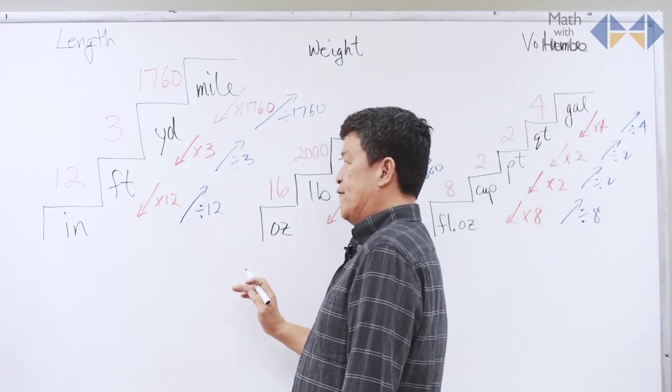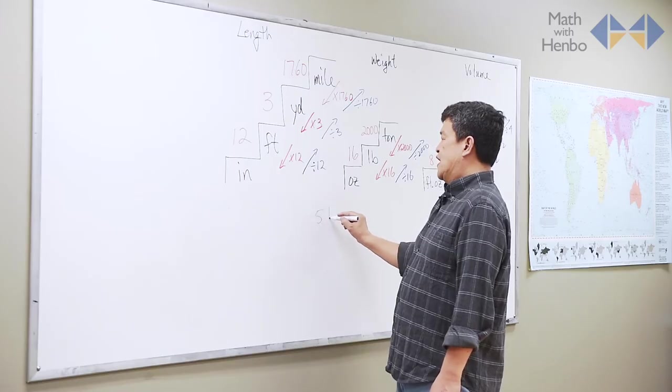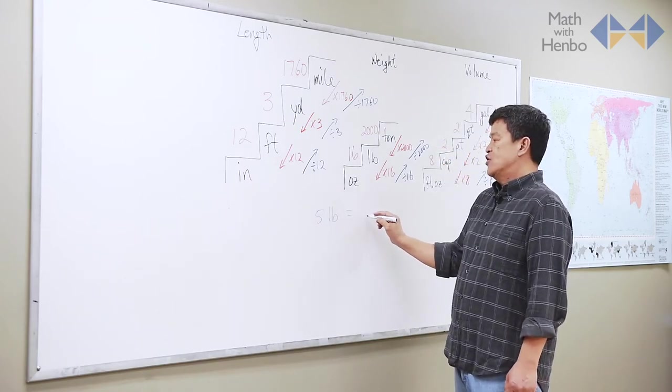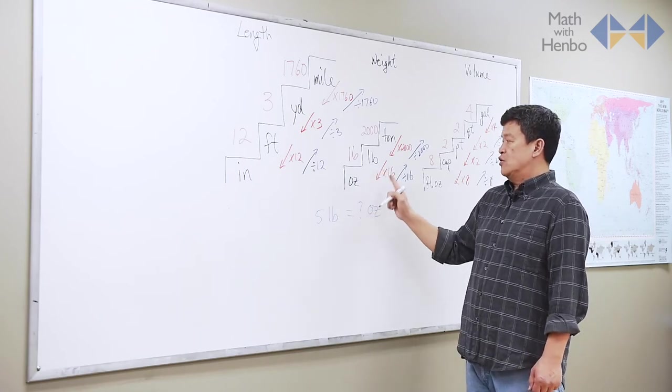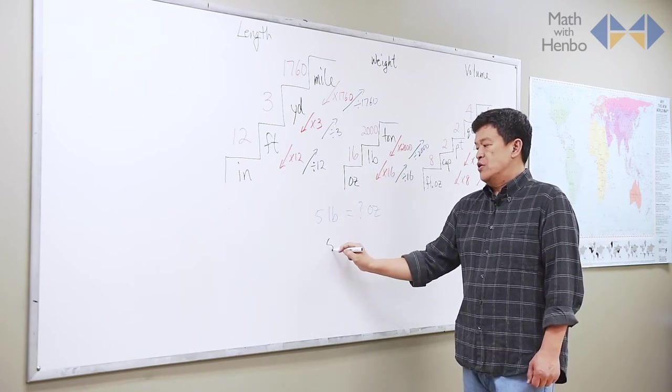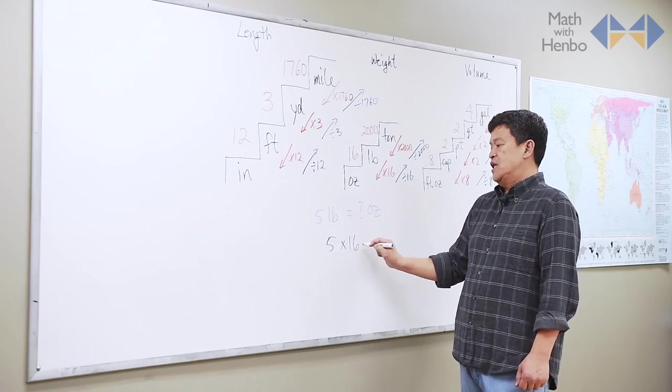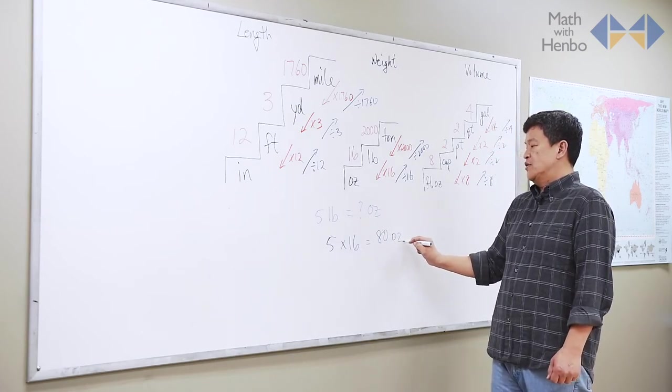So, if I have, for example, 5 pounds of meat. What is that in terms of ounces? All you have to do is take the pound to ounce conversion. So, do 5 times 16. And that should give you 80 ounces.